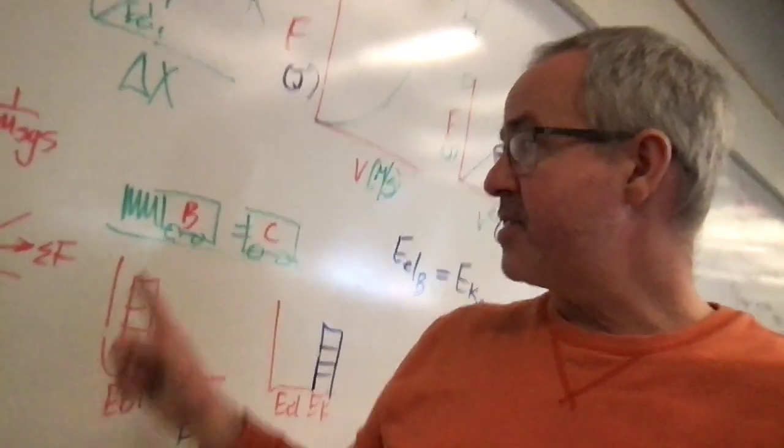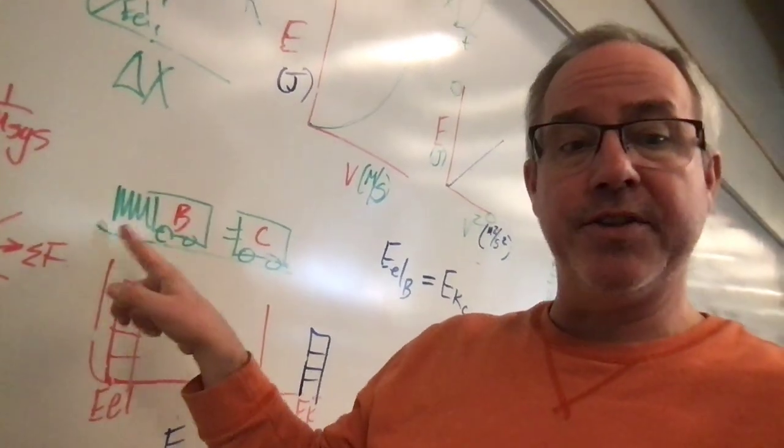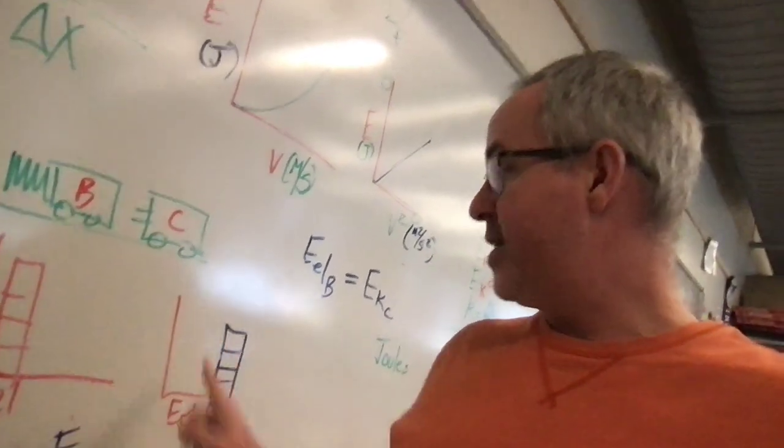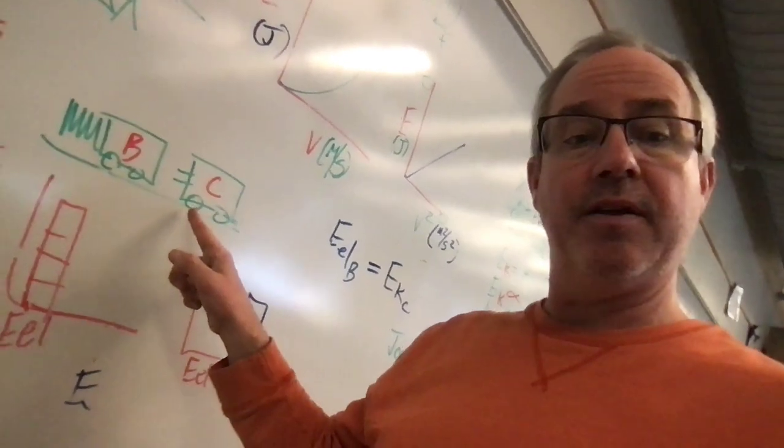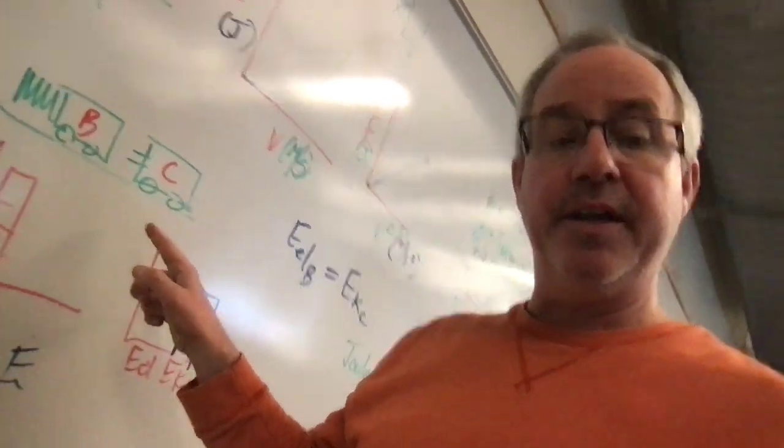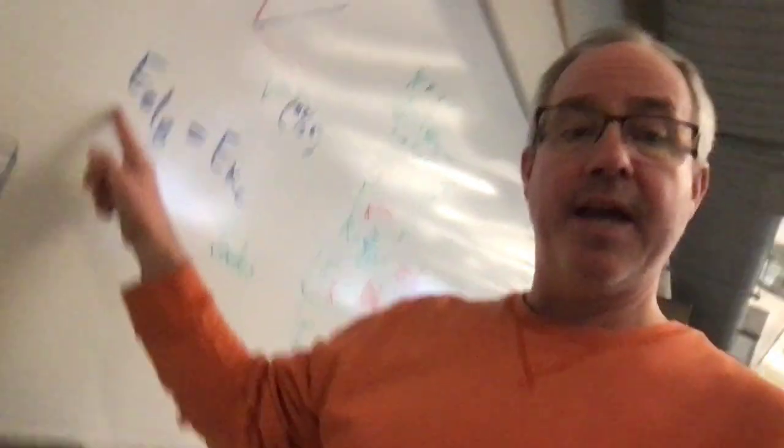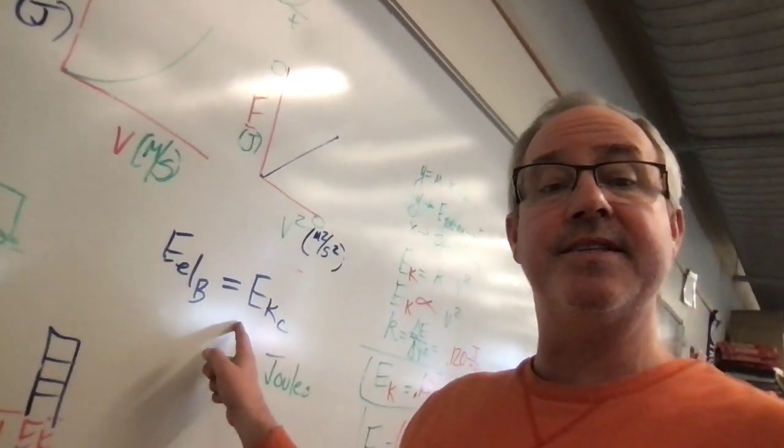We had previously discussed the fact that all of the energy that was originally stored in the compression of the spring, the elastic energy, would be stored as kinetic energy once the cart left the spring. In doing so we could say that the elastic energy at position B is equal to the kinetic energy at C.